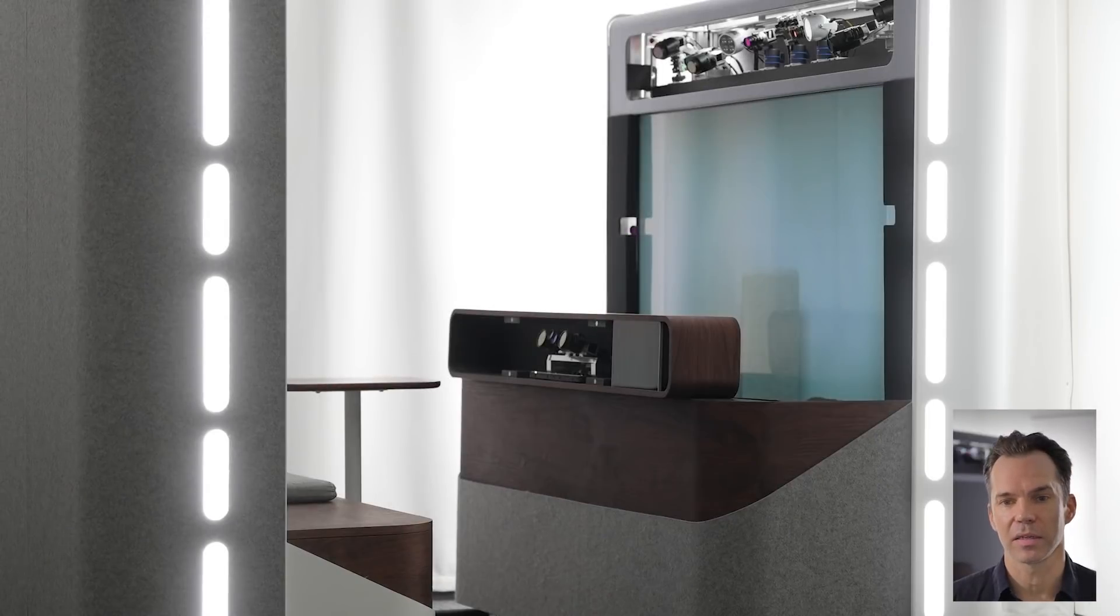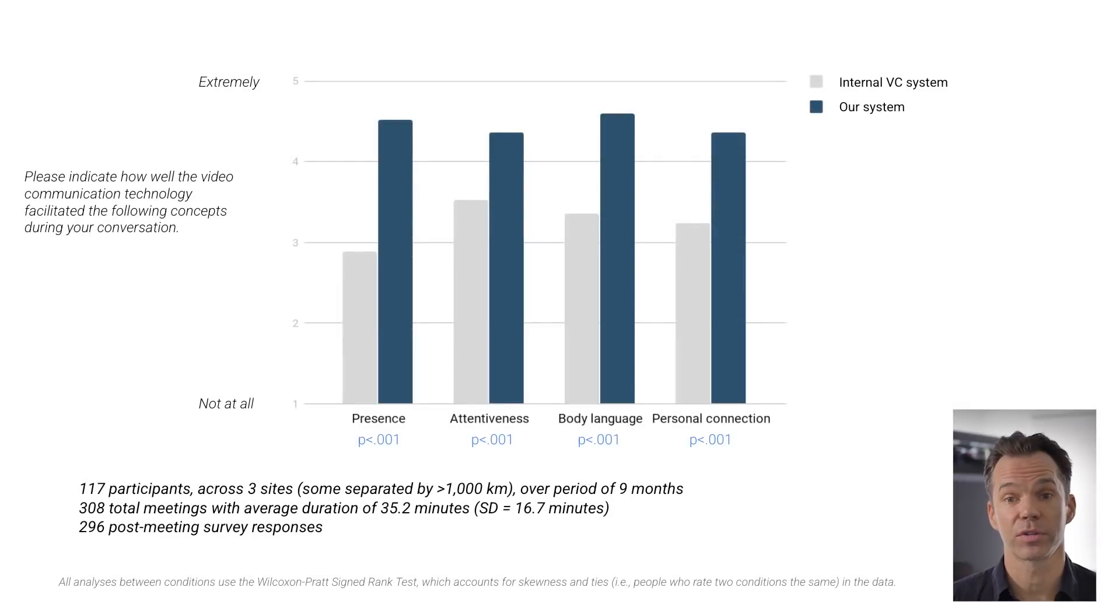We also conducted a pilot study with several other teams inside Google who had access to these systems for their team one-on-one meetings and were asked to complete a survey at the conclusion of each meeting, comparing their experience to the normal 2D video conferencing system deployed throughout the company. We collected a total of roughly 300 survey responses from 117 unique participants across 3 sites over a period of about 9 months. Our system rated significantly higher in key value indicators for communication, including the sense of feeling present with your meeting partner, the degree of attentiveness between the two participants, the ability to effectively use body language, and producing an overall stronger personal connection.